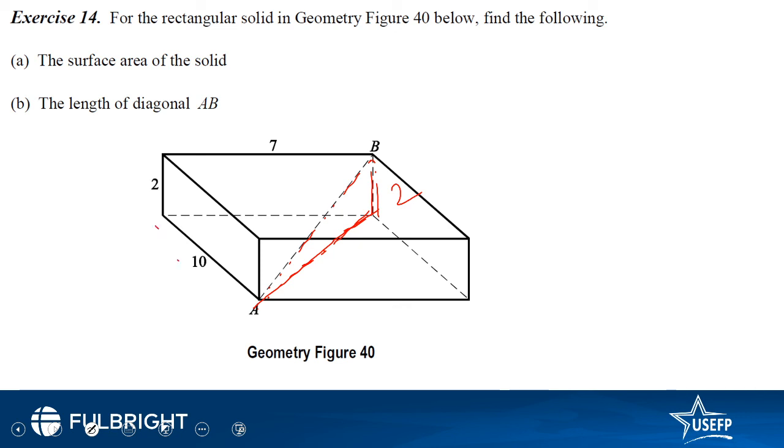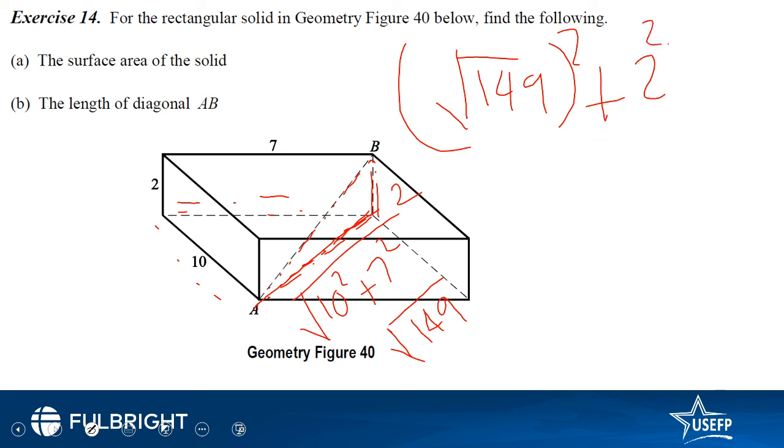So this length is the hypotenuse of the base triangle, the shaded, the dashed triangle. This length is actually equals to 10 square plus 7 square, and taking the under root it comes out to be root 149. So length AB is 149 plus 2 squared equals AB squared. So AB equals under root 153.